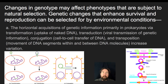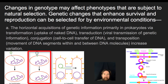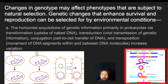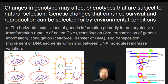Changes in genotype can affect phenotypes subject to natural selection. Genetic changes that enhance survival and reproduction can be selected for by environmental conditions. Another example is the horizontal acquisition of genetic information in prokaryotes — specifically the taking up of DNA through transformation, or through transduction where a virus infects and transfers DNA from one cell to another, or conjugation which is the sharing of a plasmid, or transposition which is the movement of a DNA segment within DNA molecules inside a genome. In all these instances, genes being inserted into a genome that provide an advantageous phenotype will be more prevalent in future generations.